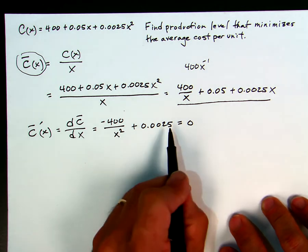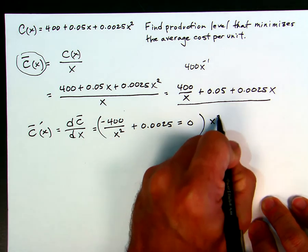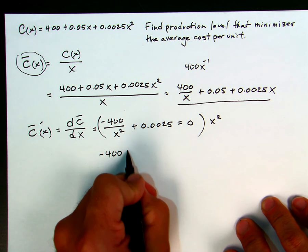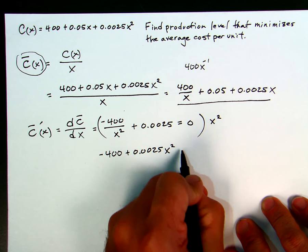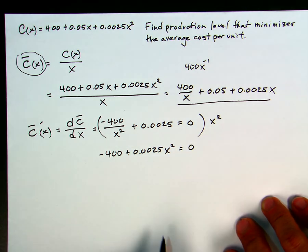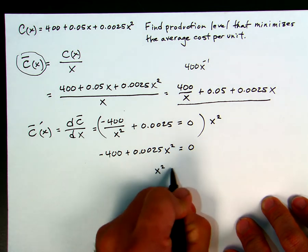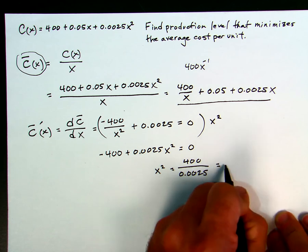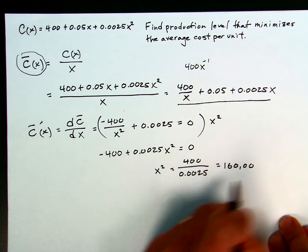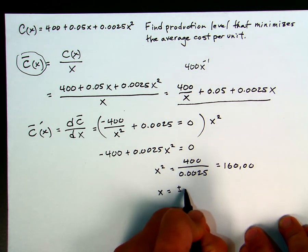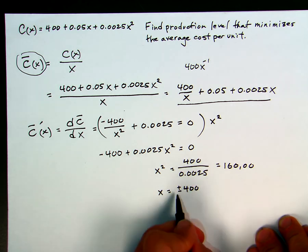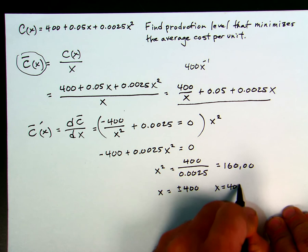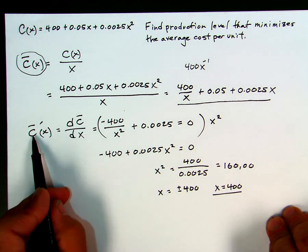There are a number of ways to solve this, but the easiest is to multiply both sides by x². The x squareds cancel, leaving negative 400 + 0.0025x² = 0. Adding 400 to both sides and dividing by 0.0025, we get x² = 400/0.0025 = 160,000. So x equals plus or minus 400. Since we're looking at production level, we have to produce a positive amount, so x = 400 is the amount that minimizes our average cost.